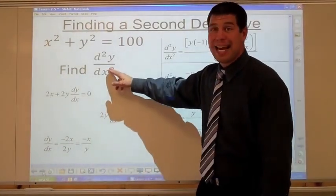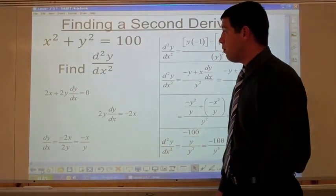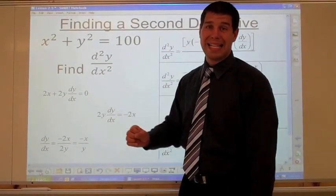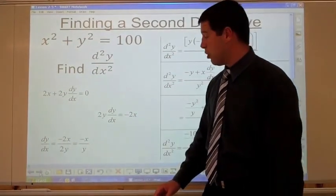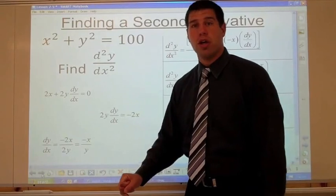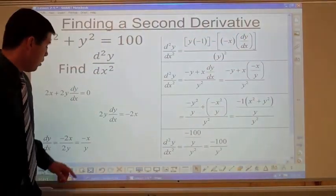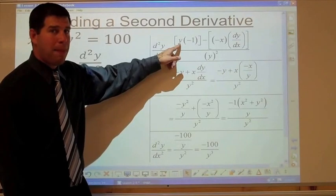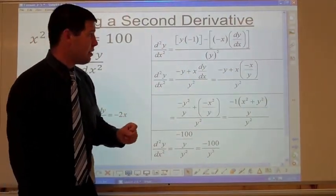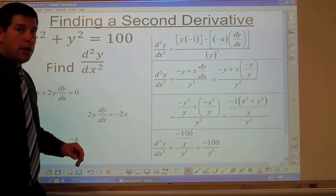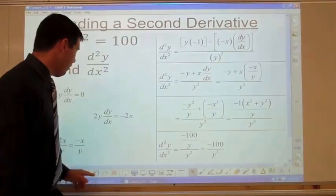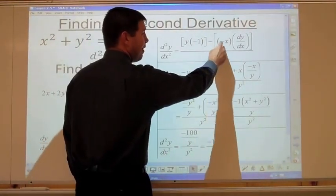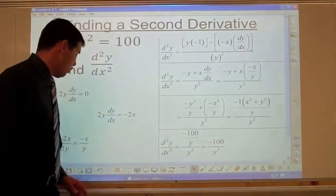They want the second derivative, so we keep going and derive again. The first derivative is negative x over y — a quotient — so use the quotient rule. Low d high minus high d low, all over low squared: y times negative 1 (derivative of negative x), minus negative x times the derivative of y which is dy/dx. So you get negative y plus x dy/dx, all over y squared.